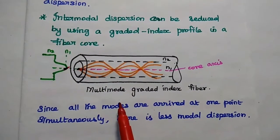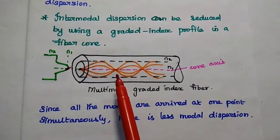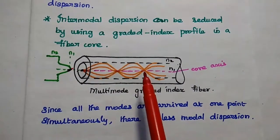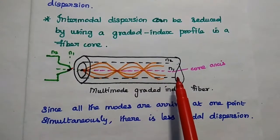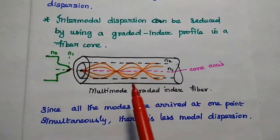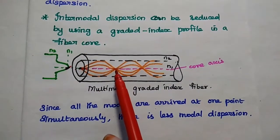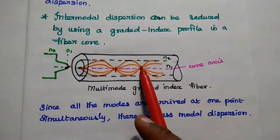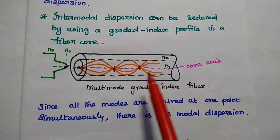So here in this one, the multiple paths are arrived at one point simultaneously. Therefore, the modal dispersion is getting reduced. You will understand this point. So in this graded index fiber, all the modes arrive at one point simultaneously. Then the intermodal dispersion is reduced.